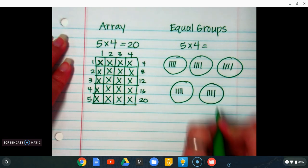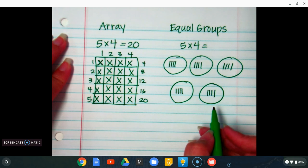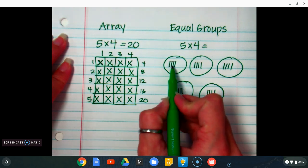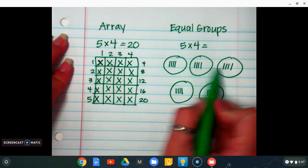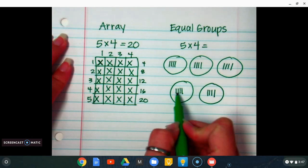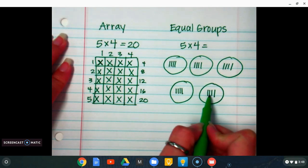Now that I have 4 tallies in each circle, I'm going to count all the tallies that I have. So that's 1, 2, 3, 4, 5, 6, 7, 8, 9, 10, 11, 12, 13, 14, 15, 16, 17, 18, 19, 20.